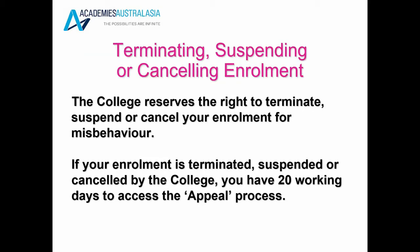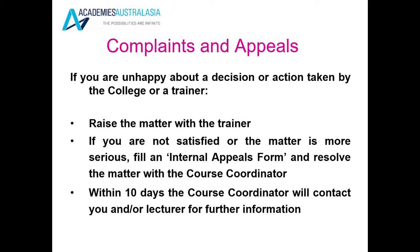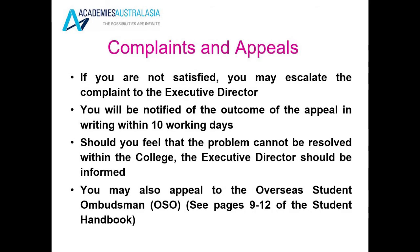Terminating, suspending or cancelling student enrolment. The college reserves the right to terminate, suspend or cancel your enrolment for misbehaviour. If your enrolment is terminated, suspended or cancelled by the college, you have 20 working days to access the appeals process. Complaints and appeals — if you are unhappy about a decision or action taken by the college or a lecturer, first raise the matter with the lecturer. If you are not satisfied or the matter is more serious, fill an internal appeals form and resolve the matter with the course coordinator. Within 10 days, the course coordinator will contact you or other lecturers for further information. If you are not satisfied, you may refer the problem to the executive director, and you will be notified of the outcome of the appeal in writing. Should the problem remain unresolved within the college, the executive director should be informed and you may also appeal to the Overseas Student Ombudsman — refer to the Student Handbook for more information.